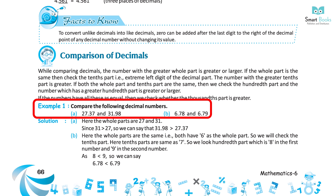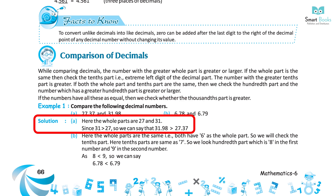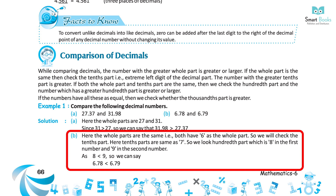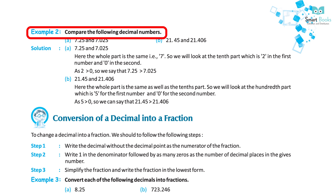Example 1: Compare the following decimal numbers. A. 27.37 and 31.98 — the whole parts are 27 and 31. Since 31 is greater than 27, 31.98 is greater than 27.37. B. 6.78 and 6.79 — the whole parts are the same (6). The tenths parts are also the same (7). Looking at the hundredths: 8 vs 9. Since 8 is less than 9, 6.78 is less than 6.79.